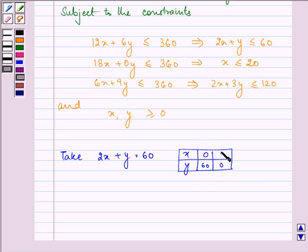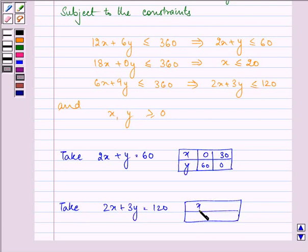Then we need to take 2X plus 3Y is equal to 120. Then the two points are: when X is 0, Y is 40. When Y is 0, then X is 60.